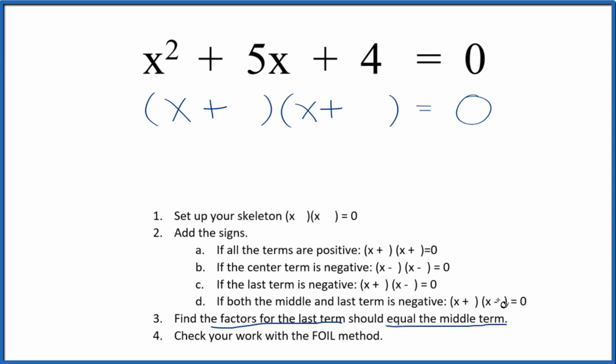So I know that four times one equals four, and four plus one equals five. So I'm just going to put a four here and a one here. And we're done—we've factored the equation x squared plus 5x plus 4 equals zero.